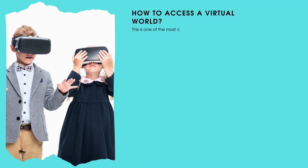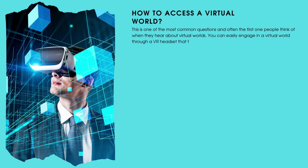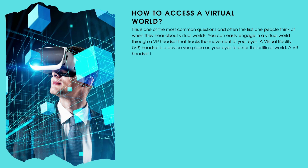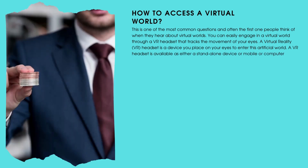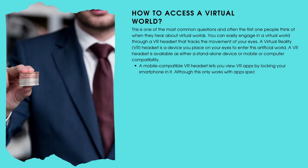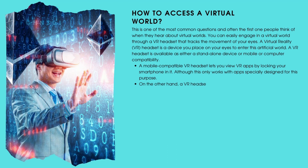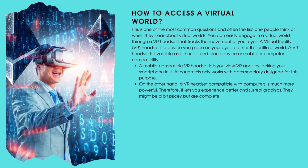How to access a virtual world? This is one of the most common questions and often the first one people think of when they hear about virtual worlds. You can easily engage in a virtual world through a VR headset that tracks the movement of your eyes. A virtual reality headset is a device you place on your eyes to enter this artificial world. A VR headset is available as either a standalone device or mobile or computer compatibility. A mobile-compatible VR headset lets you view VR apps by locking your smartphone in it, although this only works with apps specially designed for this purpose. A VR headset compatible with computers is much more powerful, so it lets you experience better and surreal graphics. They might be a bit pricey but are completely worth it.